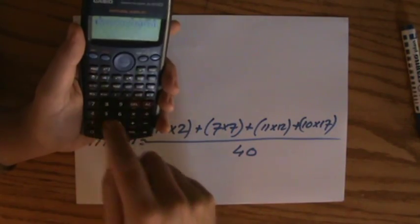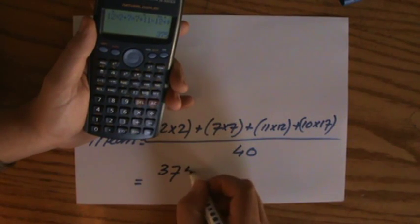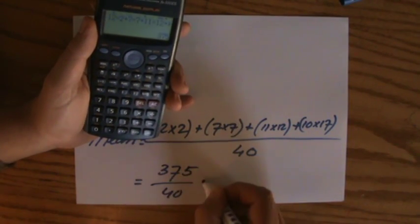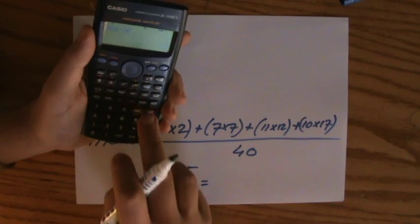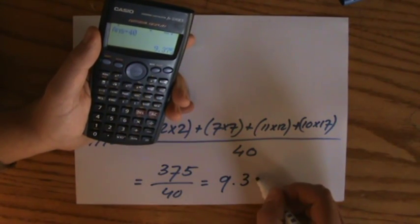11 times 12, plus 10 times 17 equals 375. Write it down. Divided by 40 equals, now we say divide by 40, and 9.375.